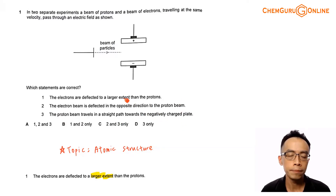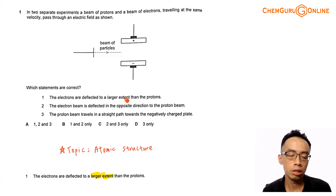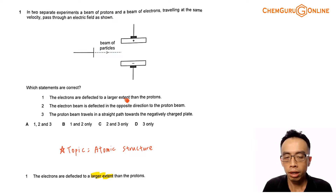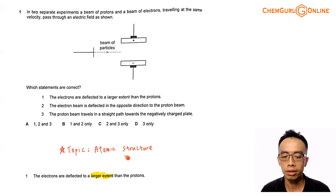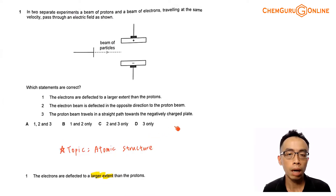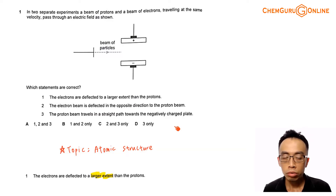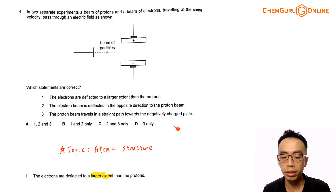We have four options: A, B, C, D. We will decide which of these statements are correct, then we can decide which is the best option. The topic tested in this question is fairly straightforward — this is under atomic structure, the deflection of charged particles through an electric field. Let us run through the statements part by part, and we will recap the key ideas involving this topic.